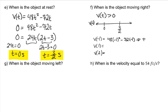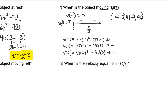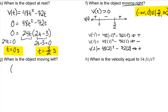To the left of 0 the result is positive, between 0 and 3 halves it is negative, and to the right of 3 halves it is positive again. So the object is moving right from negative infinity to 0 and from 3 halves to infinity, and moving left between 0 and 3 halves.